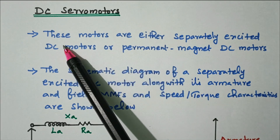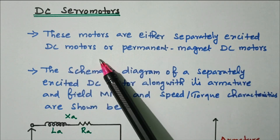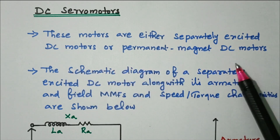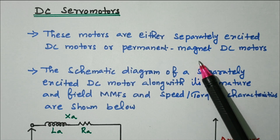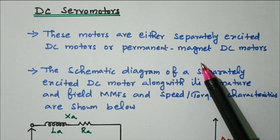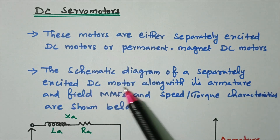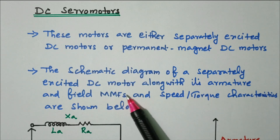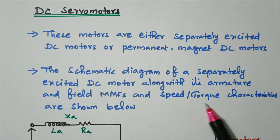Now we will see the construction. These motors are either separately excited DC motors or permanent magnet DC motors. In a DC motor we know that there is an armature and a field. The field is separately excited, and the armature is supplied separately. The schematic diagram of a separately excited DC motor along with its armature and field MMF and speed-torque characteristics are shown below.